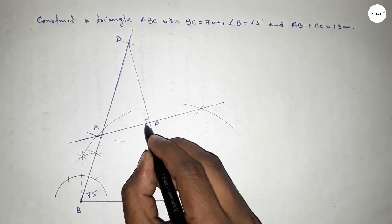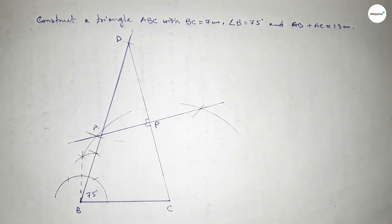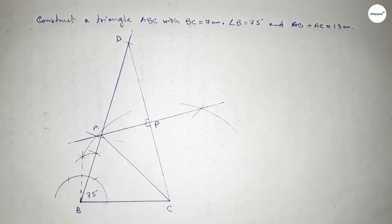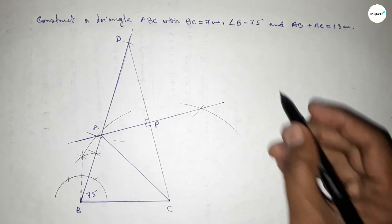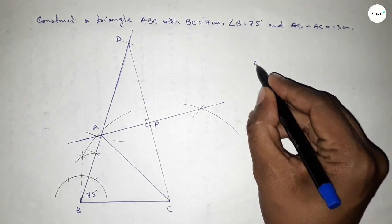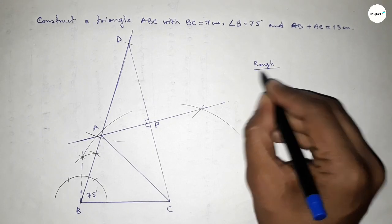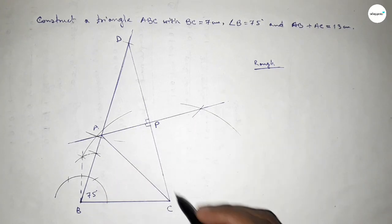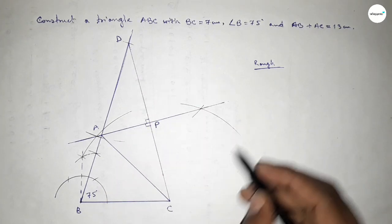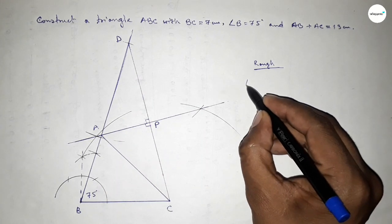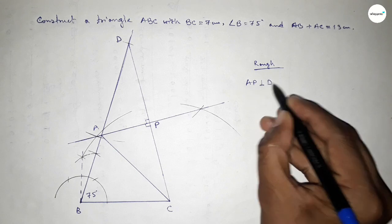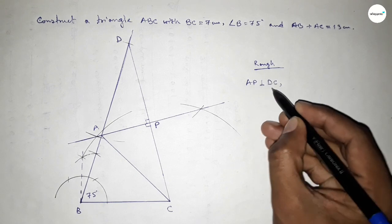The intersection of the bisector with the ray from B gives point A. Point P is where the perpendicular bisector meets CD, and this angle is 90 degrees. Now joining A and C.